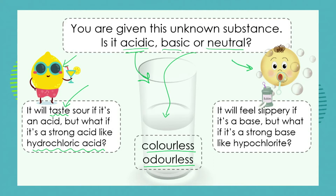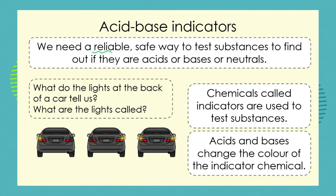The base says to us, touch it — it will feel slippery if it's a base. But what if it's a strong base like hypochlorite, which is present in bleach? If we were to feel it, we could corrode our skin and damage ourselves. So we're left with a problem: we need a reliable, safe way to test substances to find out if they're acids, bases, or neutrals.